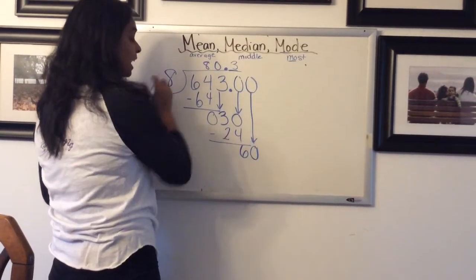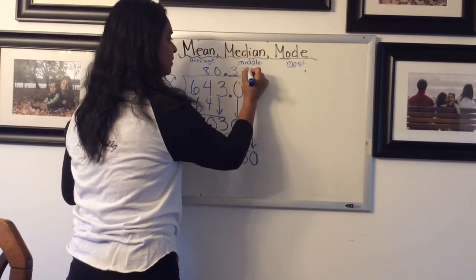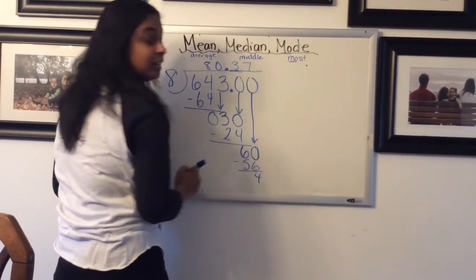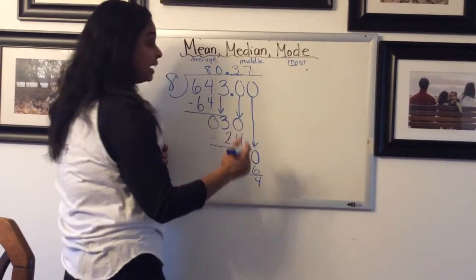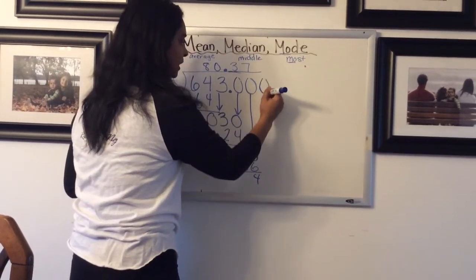Again, we don't want that remainder of 6. So we're going to go another decimal place. We're going to add another zero. Bring that down. So 60 now, 8 groups, sharing 60 into 8. That would be 7 times for 56. We've got, again, a remainder of 4. So once again, we have to go another decimal place now.